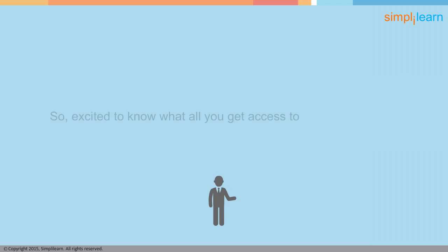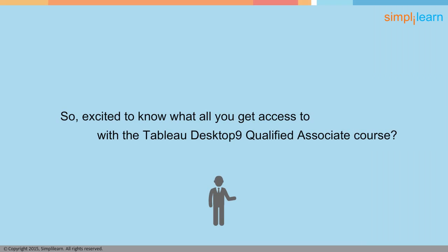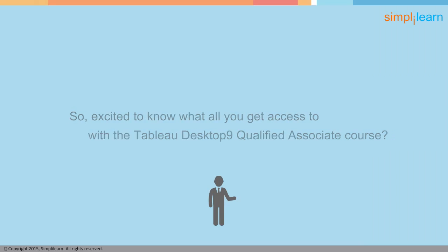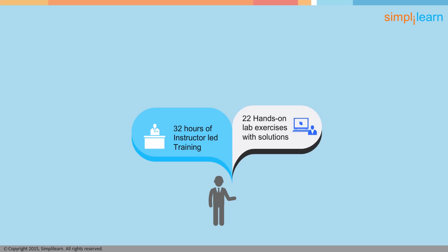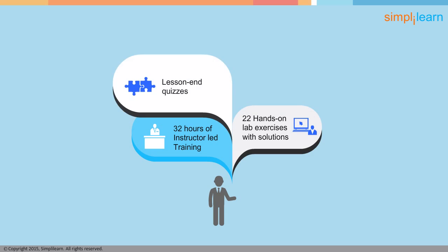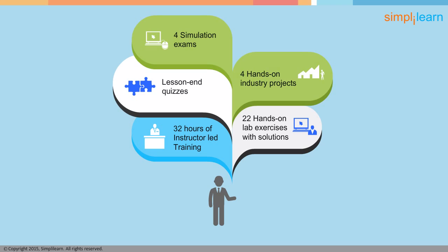Excited to know what all you get access to with the Tableau 9 Desktop Qualified Associate course? SimpliLearn provides 32 hours of instructor-led training, along with access to high-quality e-learning and 22 hands-on lab exercises with solutions in the form of a demo. You will also have quizzes at the end of each lesson, four hands-on industry projects, and four simulation exams of Tableau Desktop 9 Qualified Associate Certification.